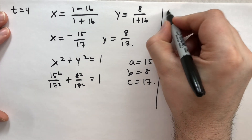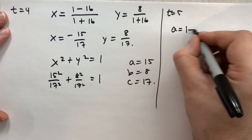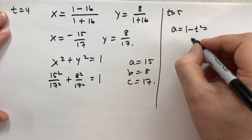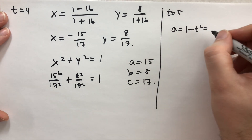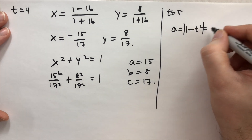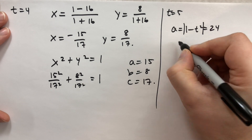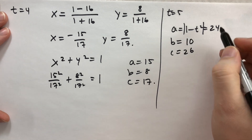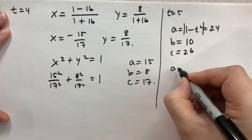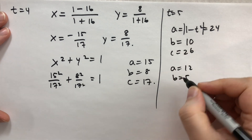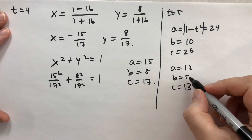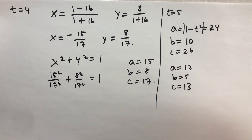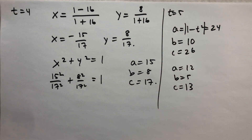Let's do t = 5. We get a = |1 − 25| = 24, b = 2×5 = 10, and c = 1 + 25 = 26. We can divide all by two: a = 12, b = 5, c = 13. So 5² = 25, 12² = 144, and 13² = 169. Those add up: 25 + 144 = 169. There's another Pythagorean triple. We've found three of them already very quickly using this formula.